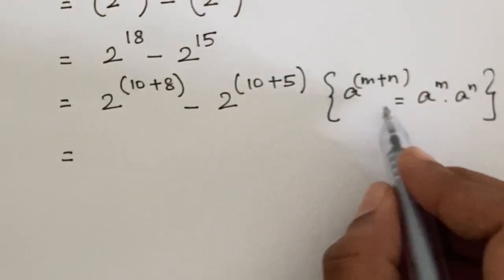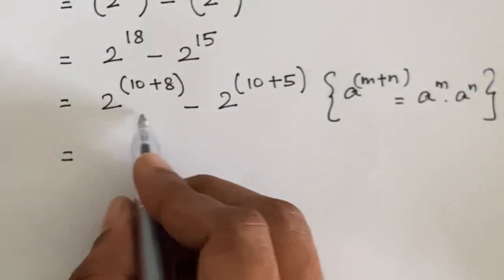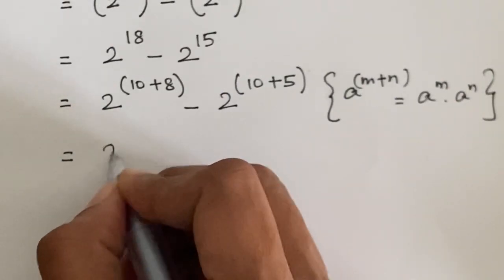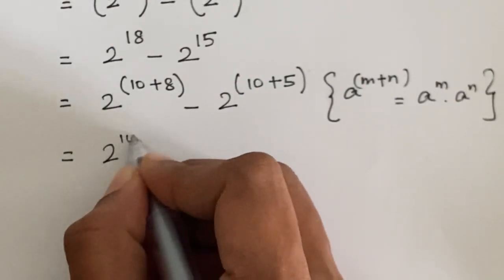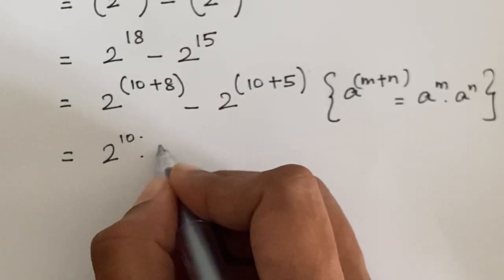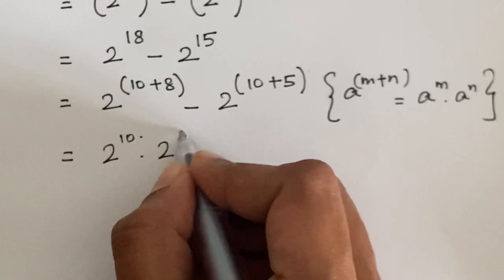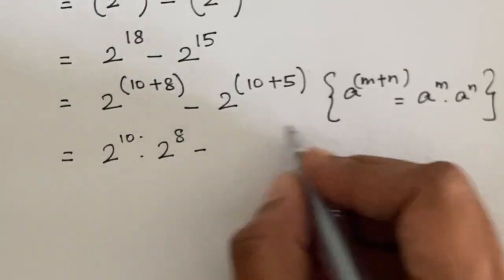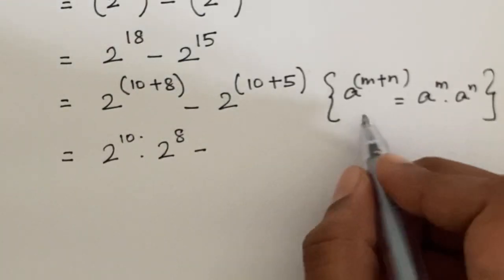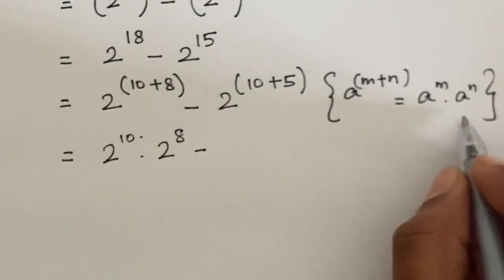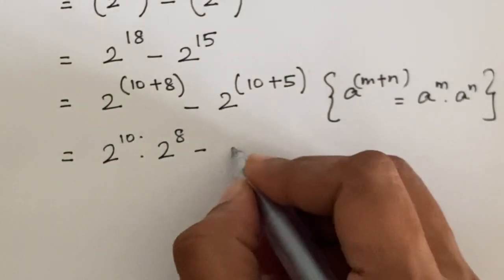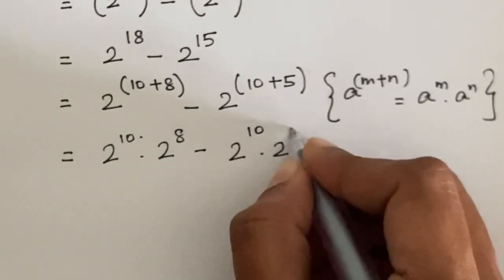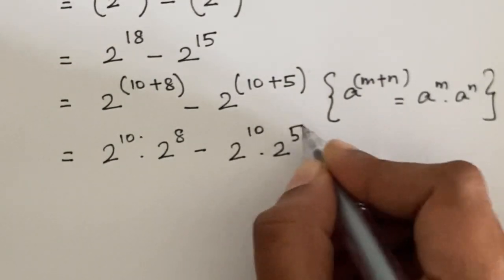So let's apply this formula. We get 2 to the power 10 times 2 to the power 8, minus 2 to the power 10 times 2 to the power 5.